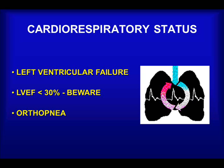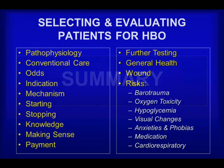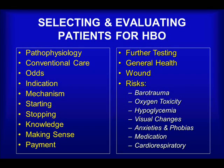This concludes the overview of the selection and evaluation of patients for hyperbarics. In summary, the ten things to consider when evaluating patients are: a need for further assessment or testing, general health and nutritional assessment, wound assessment, and risk assessment, which includes seven items — barotrauma, oxygen toxicity, hypoglycemia, visual changes, anxieties and phobias, medication, and cardiorespiratory status. It is my hope that, armed with this general approach, even as a relatively inexperienced hyperbaric physician, you may be able to improve appropriate selection and evaluation of patients for HBO, whilst at the same time avoiding the risks and difficulties associated with providing the right treatments but for the wrong reason or at the wrong time. Thank you.